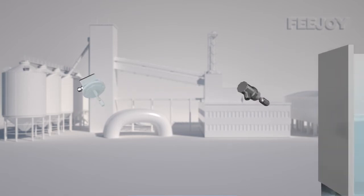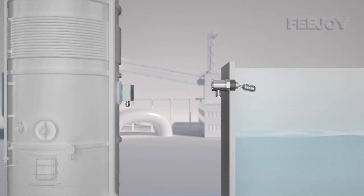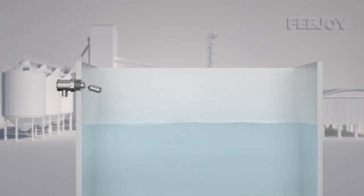The side-mounted float level switch is suitable for the control of the liquid level in the open or pressure container in the industrial production process.